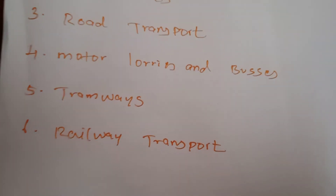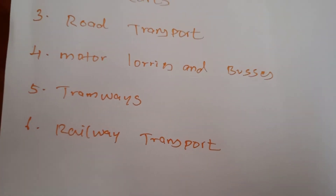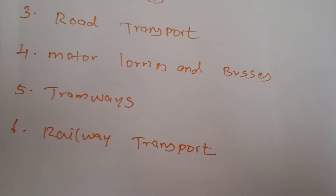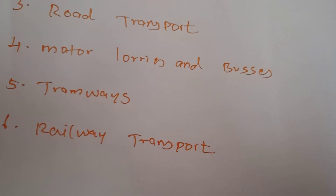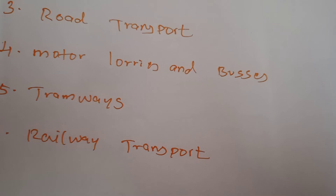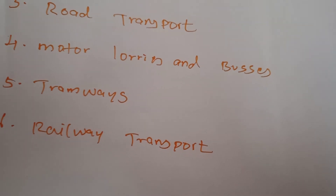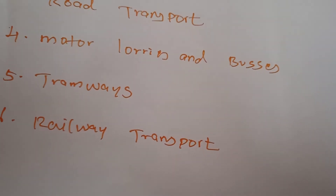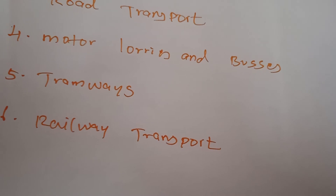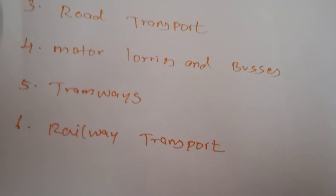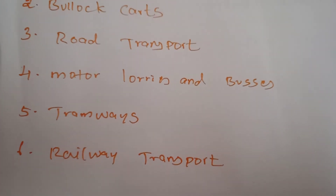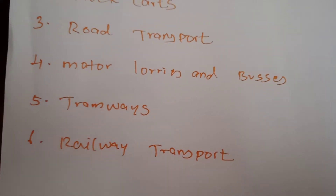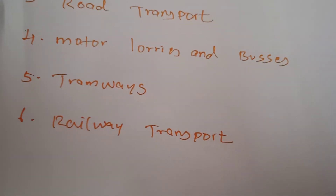Next is tramways. Tramways made their appearance in the 19th century as a form of transport suitable for big cities. Tramways were initially horse-drawn, later steam-powered, and are now electrically operated. This is also one of the pioneer forms of railway transport.